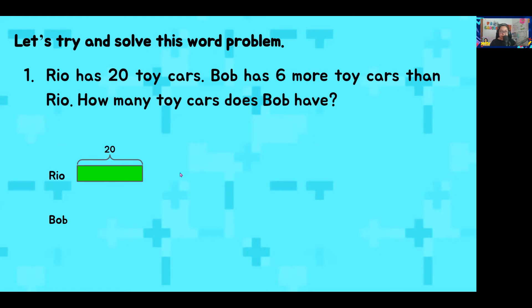Now, it is Bob's turn. We make a model for Bob. Why is Bob's model longer? Because we need to find out who has more and who has less. In this word problem, Bob has six more toy cars than Rio. That means his bar or rectangle should be longer than Rio's. And we did that here in the blue bar.